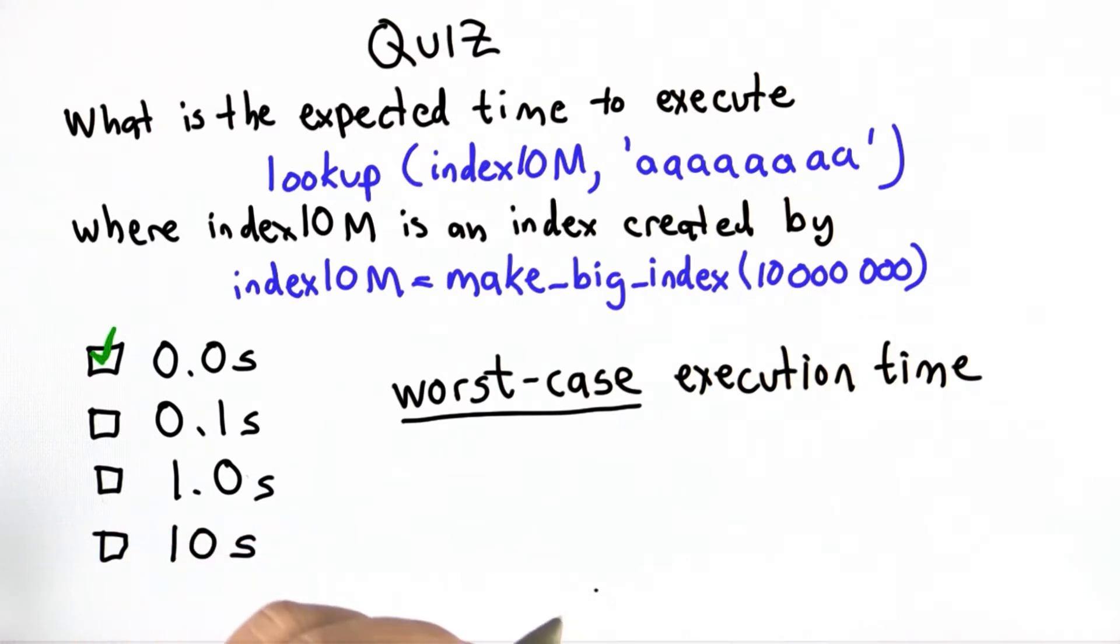So for our lookup, the worst case will be either the very last entry in the table or a keyword that doesn't exist in the table at all.